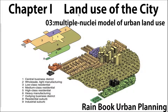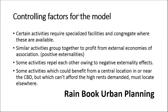What should the multiple nuclei model look like? Well, there are several controlling factors. First, certain activities require specialized facilities and congregate where these are available. For example, industry requires transport facilities and is located close to railway lines, major roads, or port facilities.